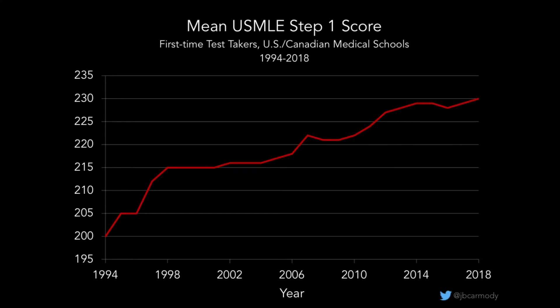This graphic shows just how striking that trend has been. To put these numbers in some context, a 200 today would put you in the 9th percentile of all test takers, even though that was a perfectly average, completely respectable score in the early days of the test. In contrast, someone who scores at the average today — a 230 — would have been in the 93rd percentile if they'd taken the test in 1992.